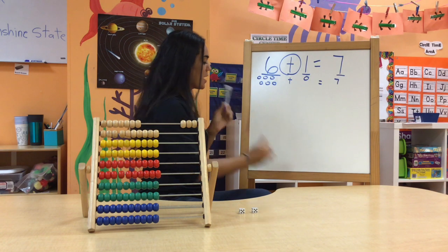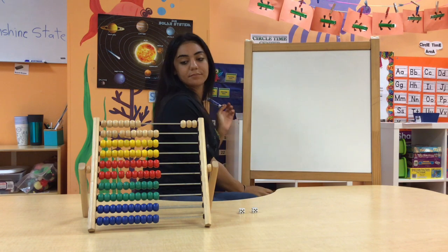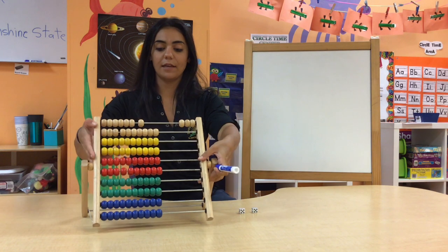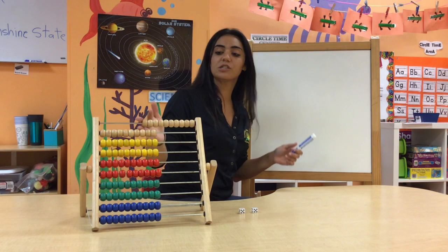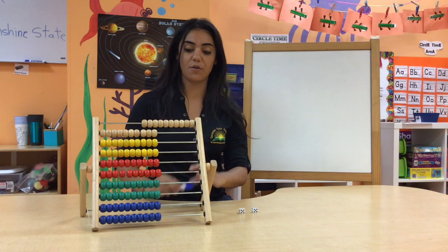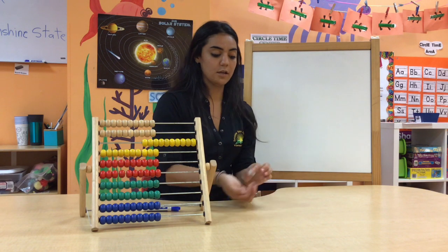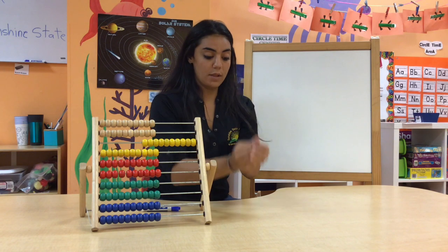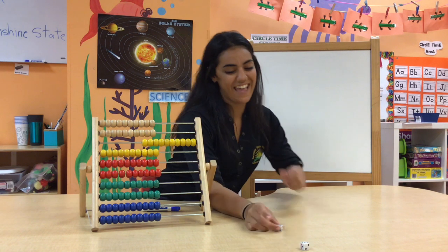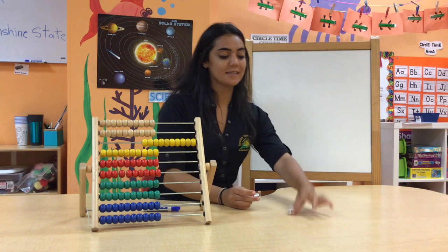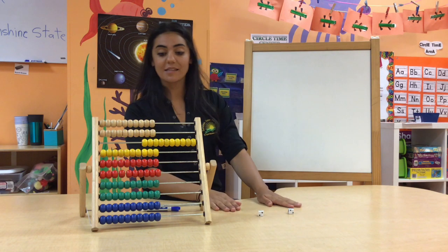Good job, guys. Let's try a couple more. So I'm going to go ahead and erase that one off the board. Let's use the color yellow next. I'm going to take my dice and roll it. We've got six and three — I rolled six and then I rolled three.